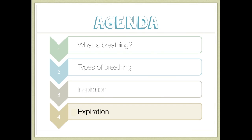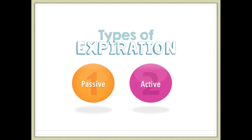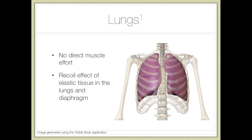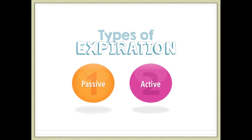Just like inspiration, there are two types of expiration: passive and active. For passive expiration, air exits the lungs without direct muscle effort. This is due to the recoiling effect of elastic tissues present in the lungs and diaphragm. Think of the lungs as a balloon that's deflating — minimal effort is needed to remove the air from it.